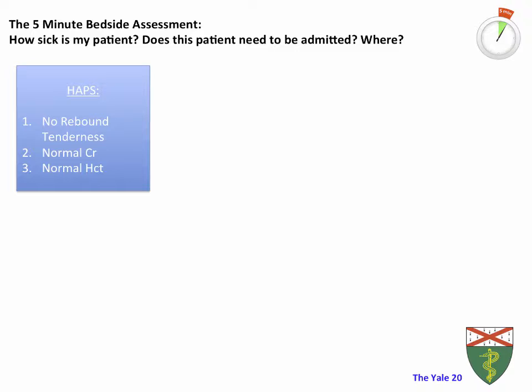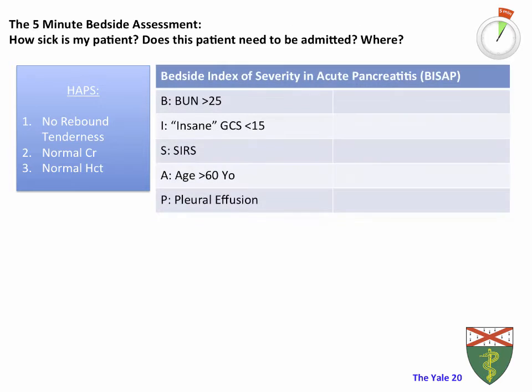If the patient doesn't have a HAPS score of zero, there are several other modalities useful in assessing severity. Depending on your training, you may have heard of the Ransom criteria developed at NYU, the Apache system, or the BICEP score. Personally, I prefer the BICEP score because it's simple and the acronym is in the name, making it easy to memorize.